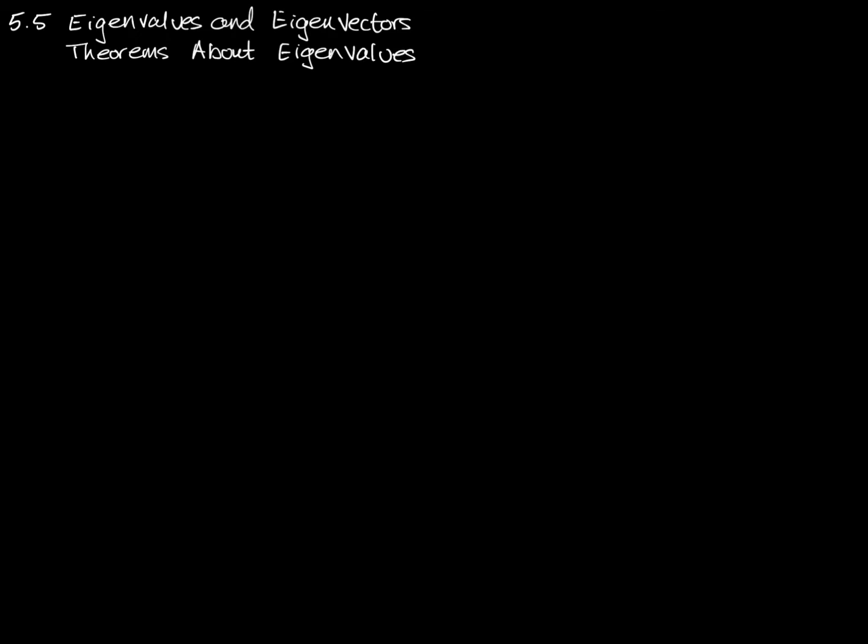Back in Section 2.6, we had a theorem, Theorem 2.6.3, called the Invertible Matrix Theorem. That theorem said that if we have a square matrix, we'll call it A, then the following statements are equivalent.